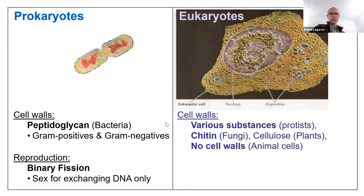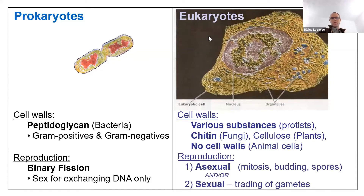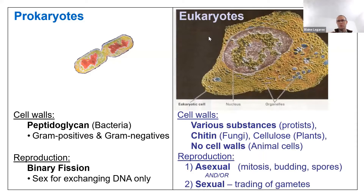Something else we talked about is reproduction. Bacteria reproduce by binary fission and they can exchange DNA through a process called conjugation, also called bacterial sex, through a sex pilus. Eukaryotes have a variety of ways to reproduce — some are asexual, some are sexual, some can do both. It kind of depends on the organism. It's really complicated when you get to protists and fungi, so I will not be getting into it in a lot of detail, just a little bit here and there.